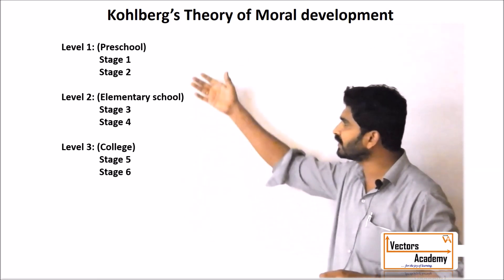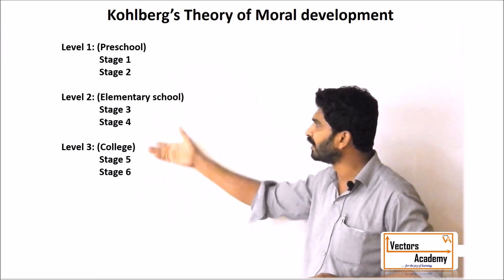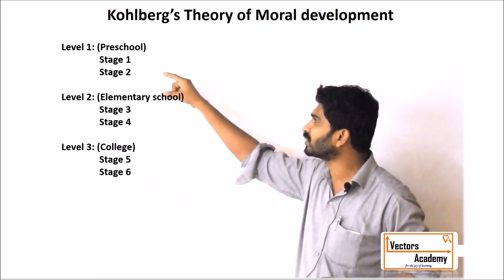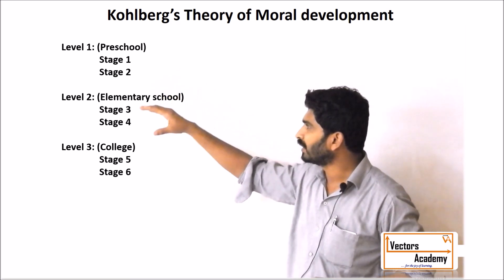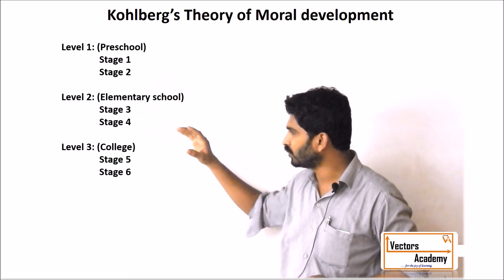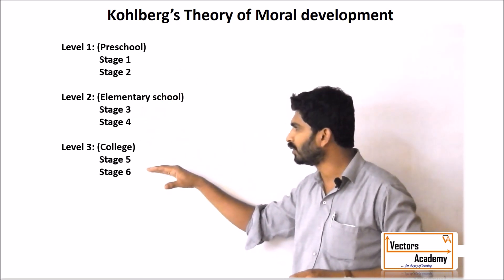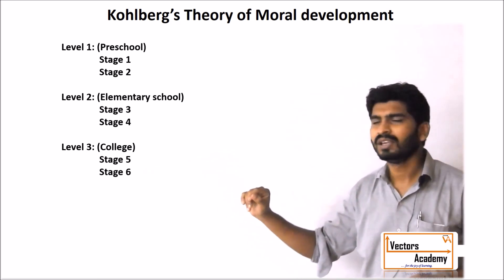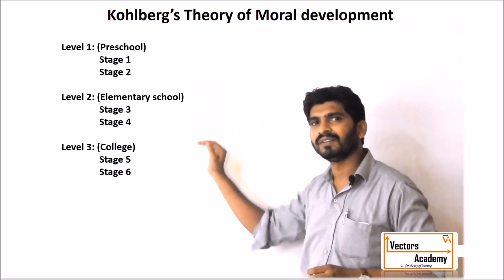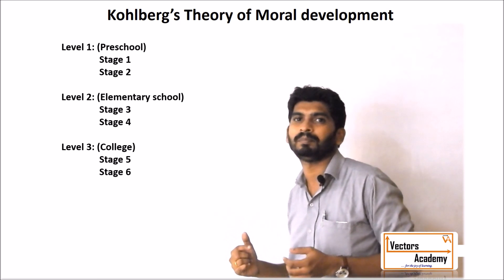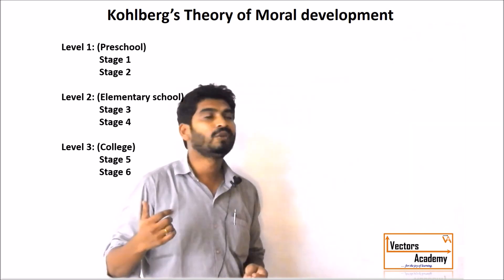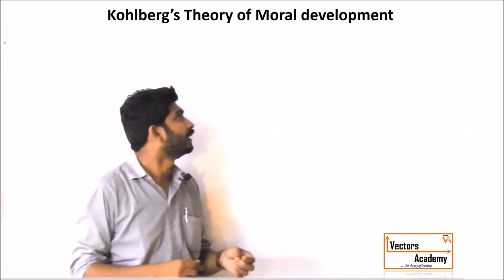These were three different levels: the first one was observed in preschool, the second during elementary school, and the last one during college. These are three different levels where the moral development of a student takes place. We will have a look at them one by one.